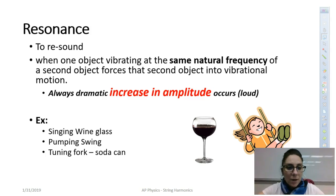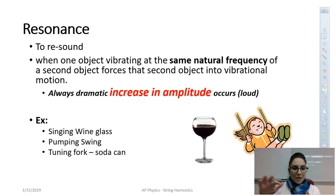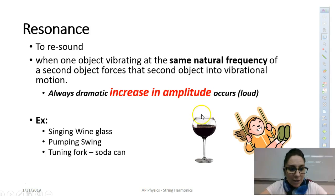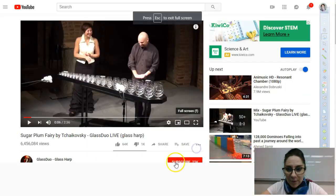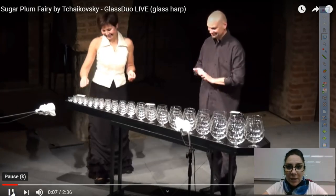I call this the singing wine glass example. You may have done this before — if you dip your finger in a glass and rub the rim, it starts to get really loud. That's because rubbing the top of the glass causes vibrations, and if you do it at the right rate and match the frequency of the glass itself, you get a loud sound. I found an example on YouTube called the singing harp — they filled glasses with different amounts of water to make different frequencies. This is a concept of resonance.